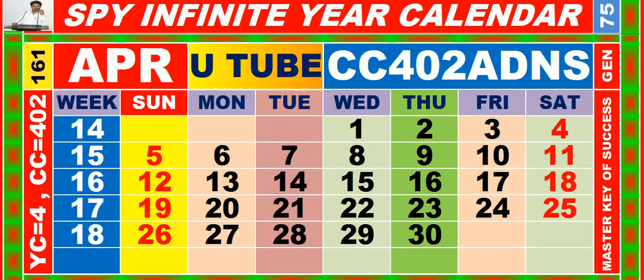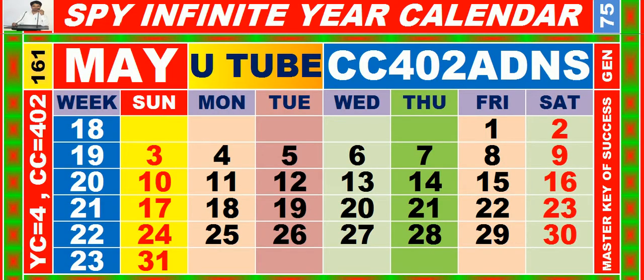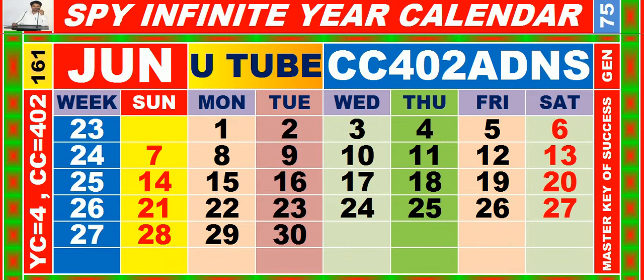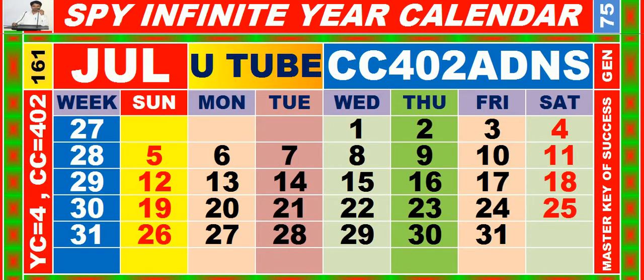Calendar for the month of April, having calendar code equal to 402. Calendar for the month of May, having calendar code equal to 402. Calendar for the month of June, having calendar code equal to 402.